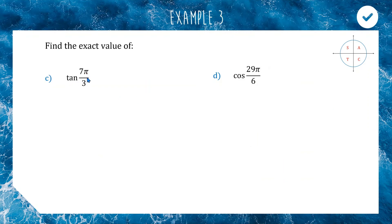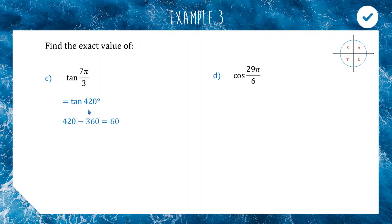Next: tan(7π/3). π/3 is 60 degrees, times 7 gives 420 degrees. Since trig functions repeat every 360°, tan(420) = tan(60), because 420 − 360 = 60. Tan(60) = √3.